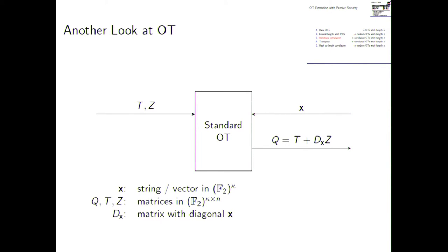And in a sense, it's just rewriting again. So instead of having several strings T and several strings Z, we just put them in matrices. So we have a matrix T of bits, a matrix Z of bits, and we have a vector of choice bits X. And then, it is rather straightforward to compute that the output of the receiver is essentially the combined output of the different OT instances, is the base matrix T plus D_X Z, whereas D_X is a matrix with the choice bits X in the diagonal and zero otherwise.